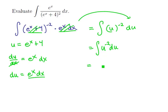This is an ordinary power function, so we'll simply up the power by 1, divide by the new power, and we get negative u to the minus 1.